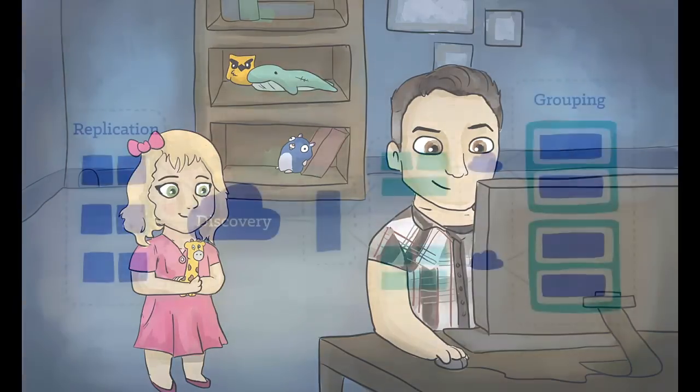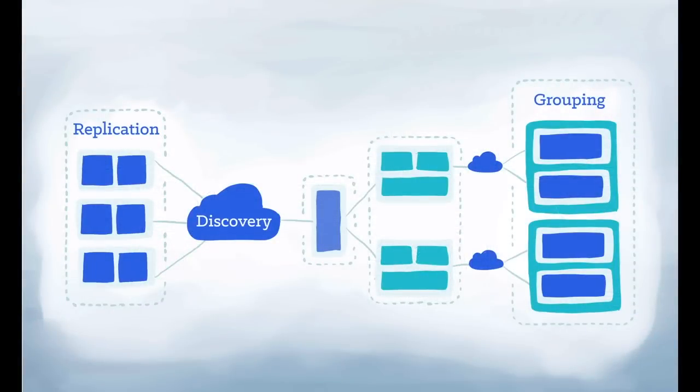And I responded, Kubernetes is an open source orchestration system for Docker containers. It handles scheduling onto nodes in a compute cluster and actively manages workloads to ensure that their state matches the user's declared intentions. Using the concept of labels and pods, it groups the containers which make up an application into logical units for easy management and discovery. And my daughter said to me, Huh?